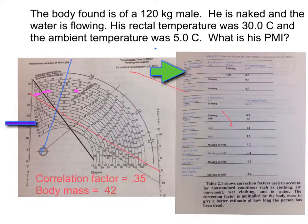A body was found of a 120 kilogram male. He is naked and the water is flowing. Looking at our correlation factor, we see that the body's naked and the water's flowing, giving us a correction factor of 0.35. We take 120 kilograms and multiply it by our correction factor, getting a body mass of 42.